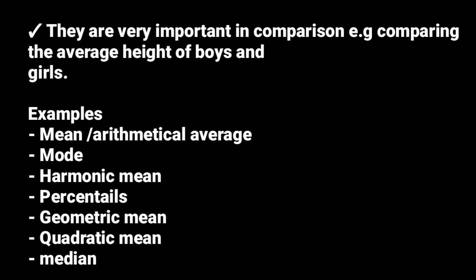Examples of measures of central tendency: we have mean, also known as arithmetical average, then we have mode, harmonic mean, percentiles, geometric mean, quadratic mean, and median. They're all measures of central tendency. You come up with one figure — for example, the mean figure — that explains the entire set of data.